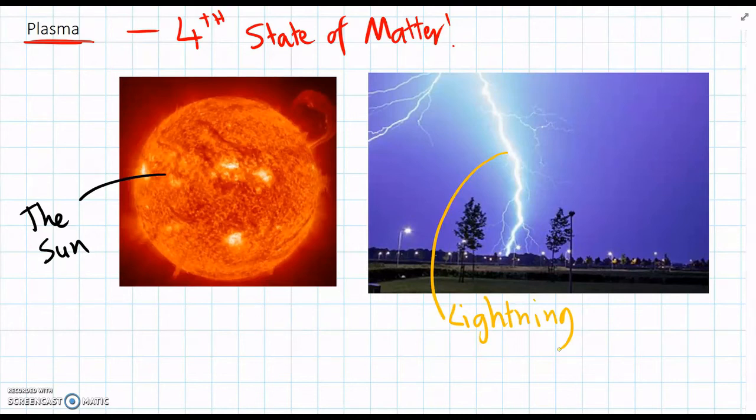So we can look at these two examples and we can see plasma doesn't really exist in normal conditions, like in everyday temperatures on Earth. And that's because plasma needs two main things to form.